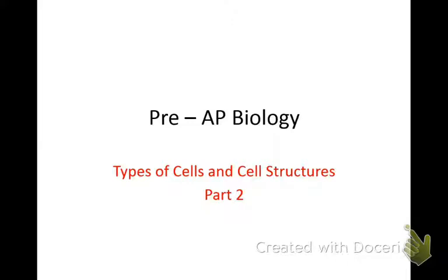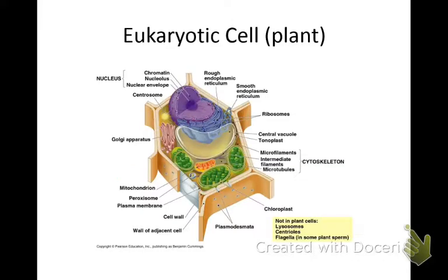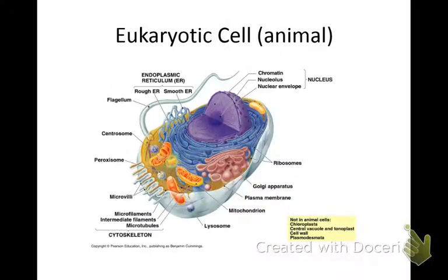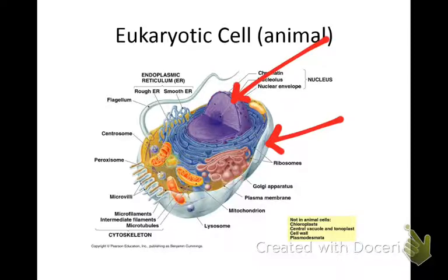The first thing is three main parts to a eukaryotic cell. Remember, eukaryotes are plants, animals, fungi — everything except bacteria. Eukaryotes are more complex, as we said in last night's video. So three main parts: you've got a cell membrane, a nucleus, and then the cytoplasm is just the extra stuff.